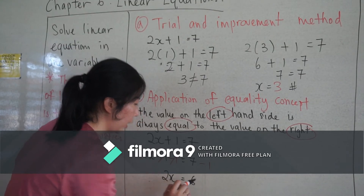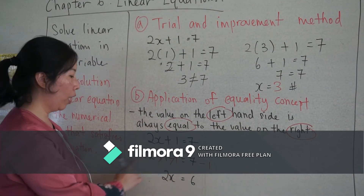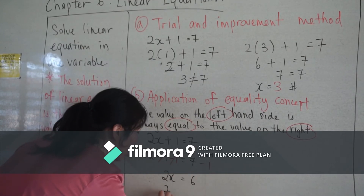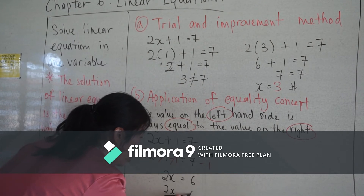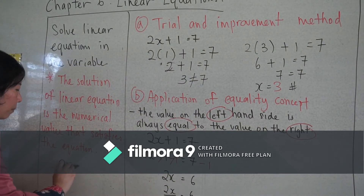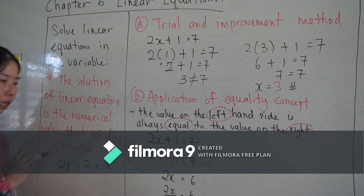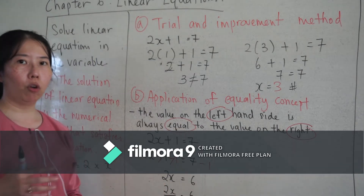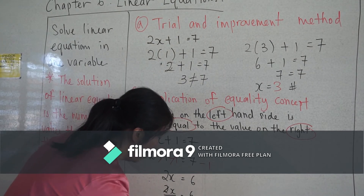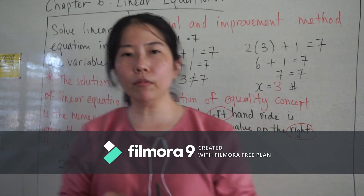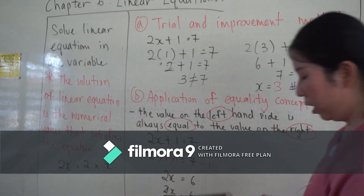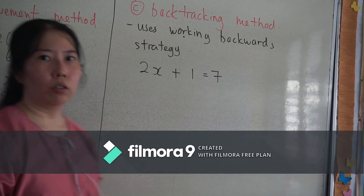Continuing: two x equals six, since the plus one and minus one cancel. Then, since two x is born by multiplication, the opposite is division. Dividing both sides by two gives x equals three — the same answer as the trial and improvement method.